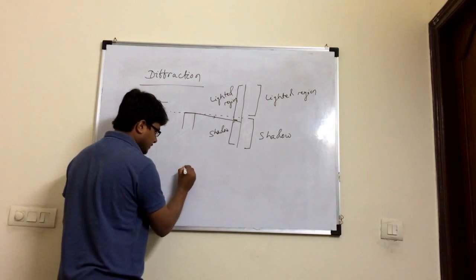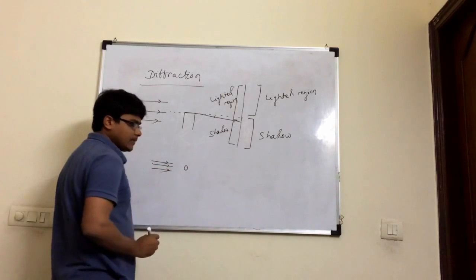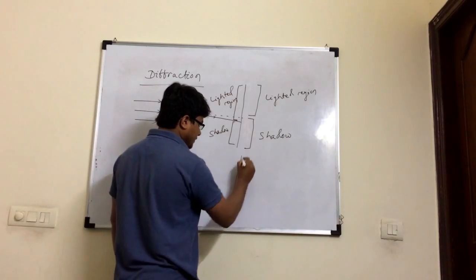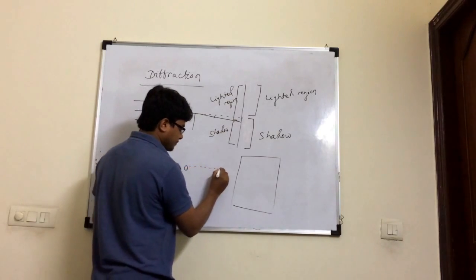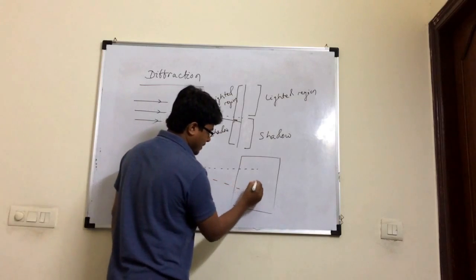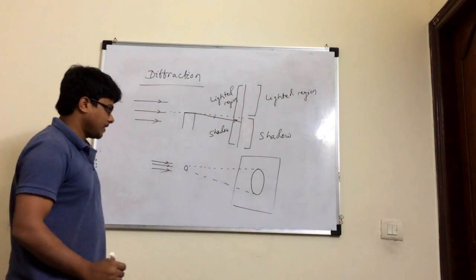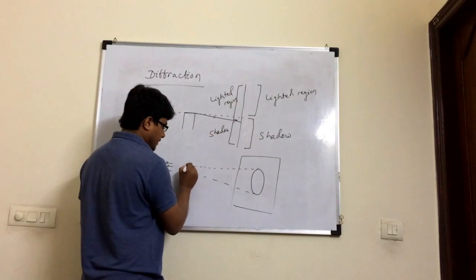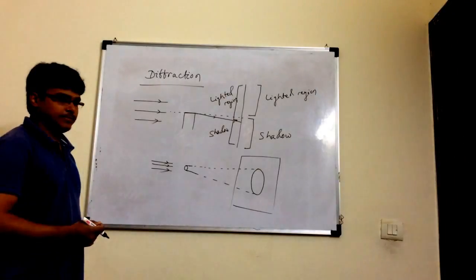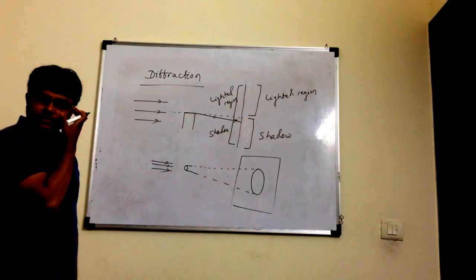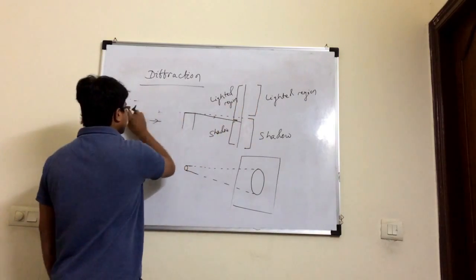The same applies to a single slit. If you take a narrow slit and allow light rays to pass through it, on the screen you will see a larger shape of the slit. This will happen only if the light ray bends at the edge of the narrow slit. So these are examples of diffraction — the phenomenon of bending of light around an obstacle or a narrow slit.